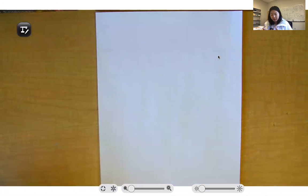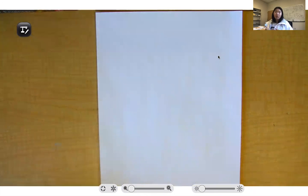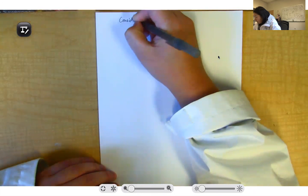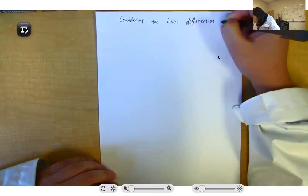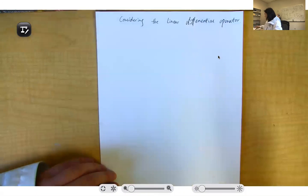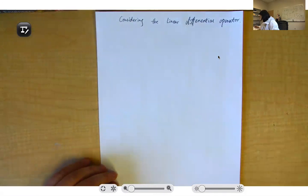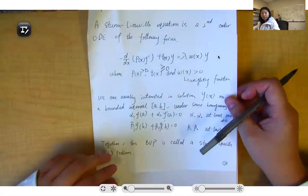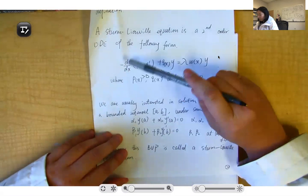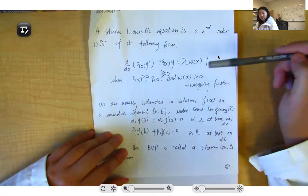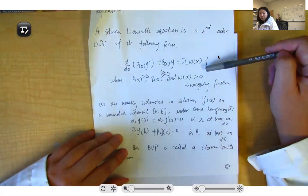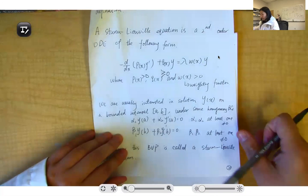We talked previously that the Sturm-Liouville problem is essentially an eigenvalue-eigenvector problem. So let's see how the SL problem can be transformed into one. Consider the linear differential operator. For our Sturm-Liouville problem, we derived its definition: negative d/dx times p(x)y' plus q(x)y equals lambda times omega(x) times y.